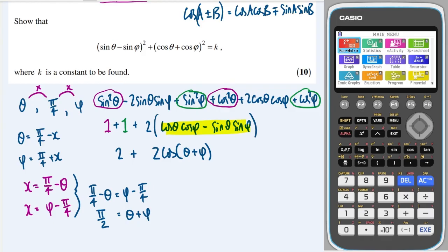Okay, great. So now I can finish off my expansion here. I can get two plus two lots of cos, and theta plus phi is pi over two. And cos of pi over two is the same as cos of 90, which is zero. So this just gives me two. So therefore, the constant k is equal to two.